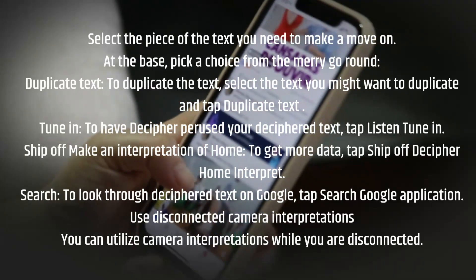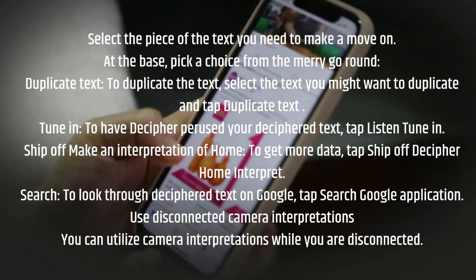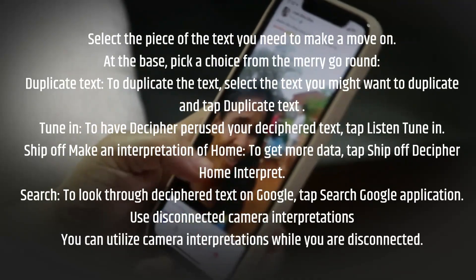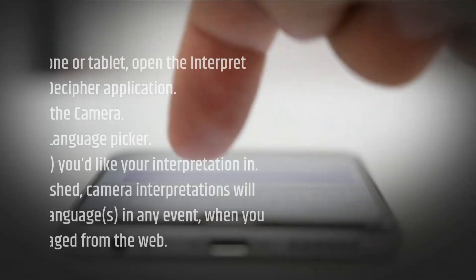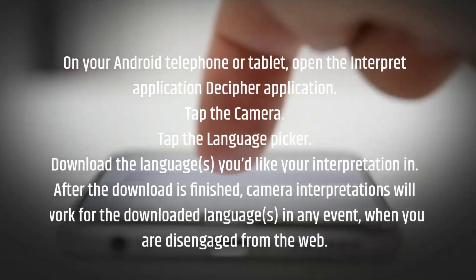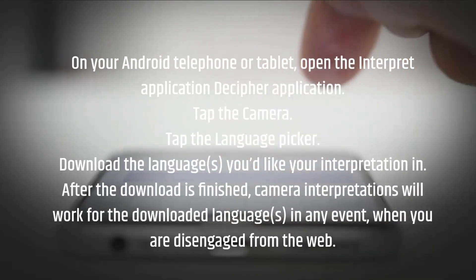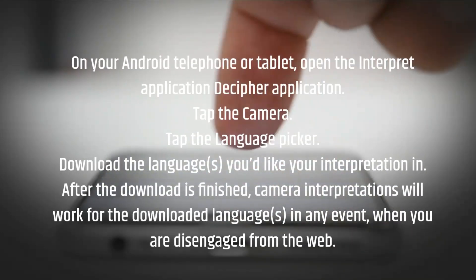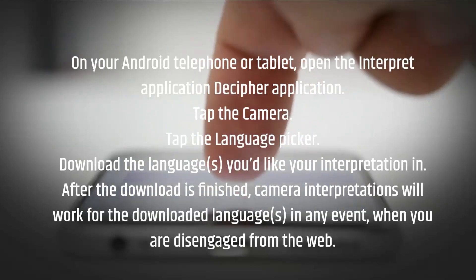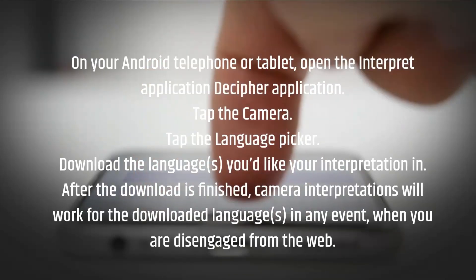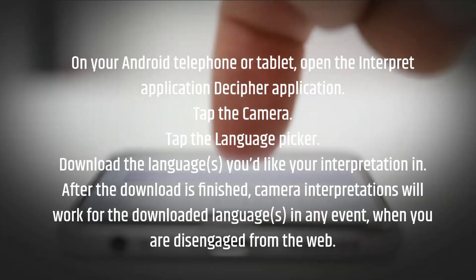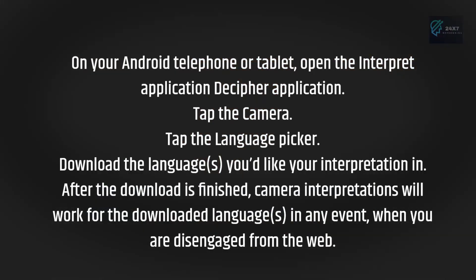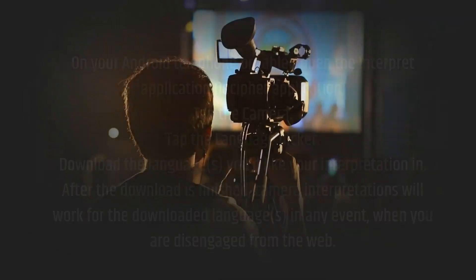You can use camera translations while you are offline. On your Android telephone or tablet, open the Translate application. Tap the camera, then tap the language picker. Download the languages you'd like your interpretation in. After the download is finished, camera translations will work for the downloaded languages even when you are disconnected from the web.